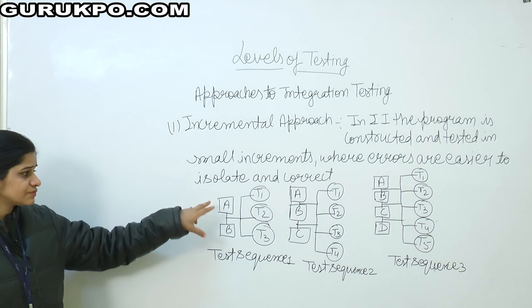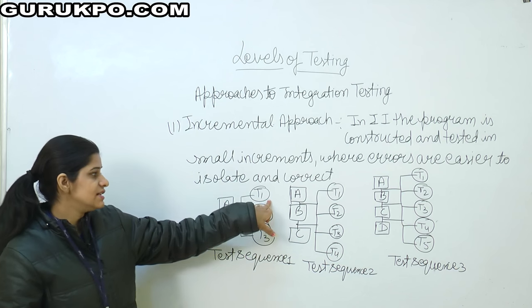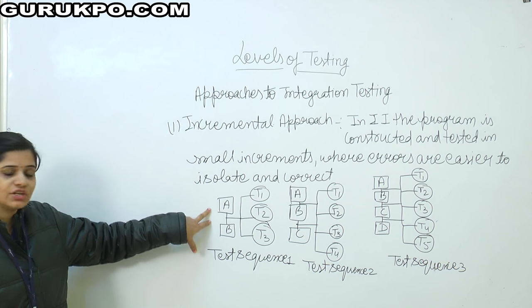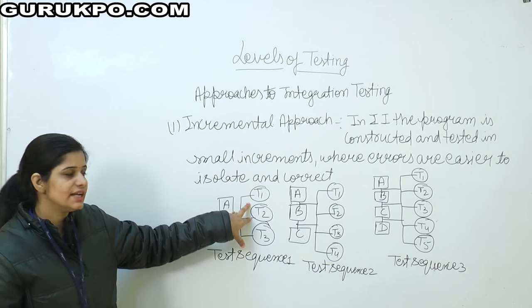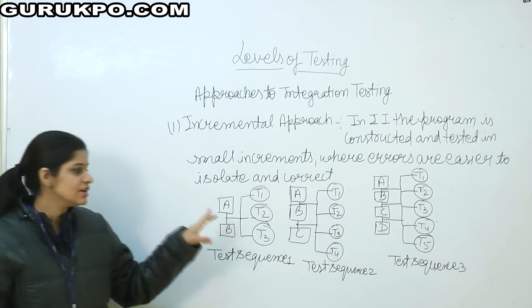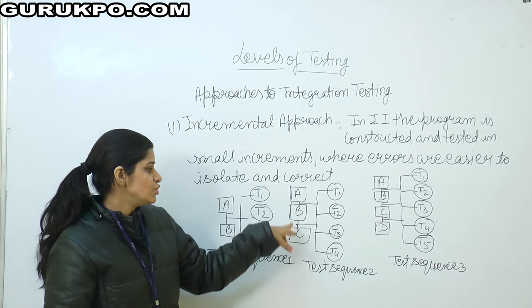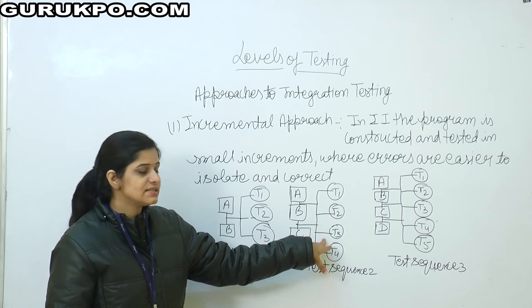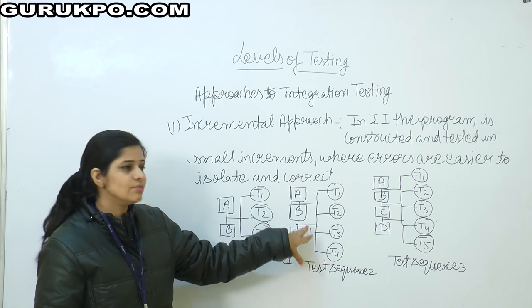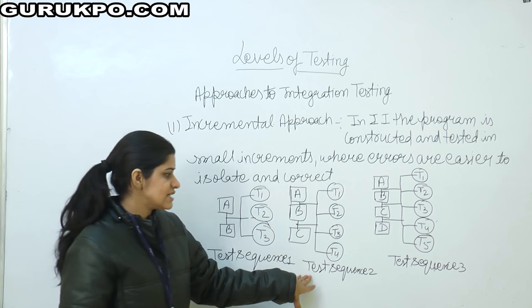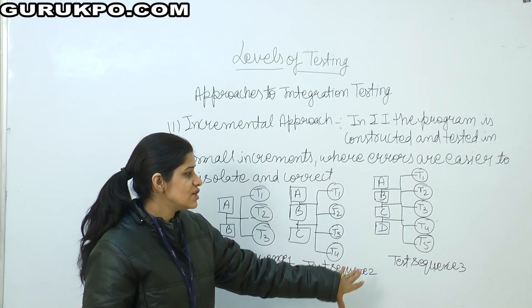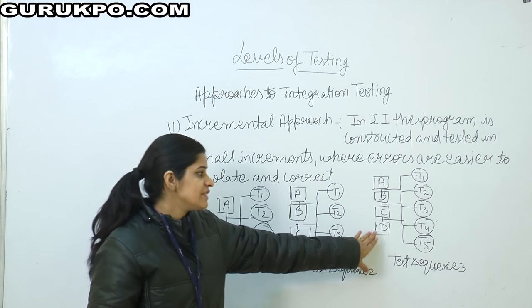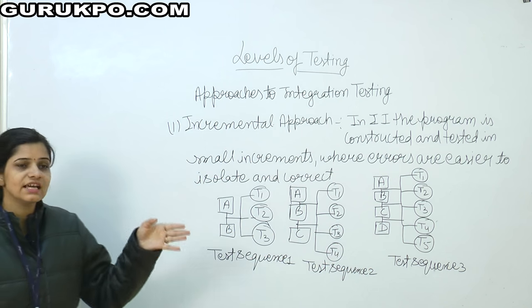In the incremental approach, we have modules A and B which are being integrated with each other. Then tests are applied — test one, test two, and test three. After that we increase it by adding one more module — module C. Then we apply test T4 on it. Then test sequence two follows. Then in test sequence three, we add module D and apply test T5. The approach keeps incrementing forward in this way.